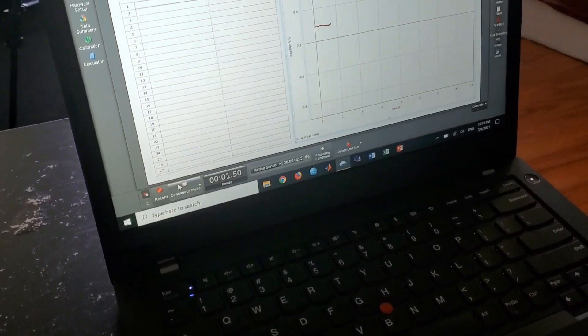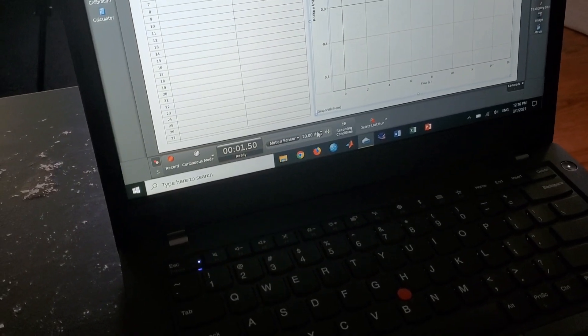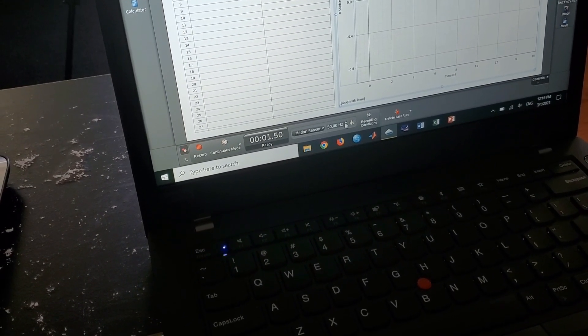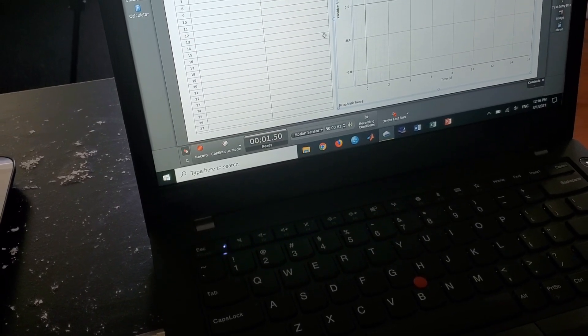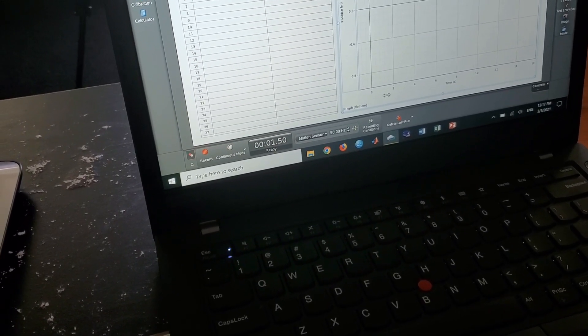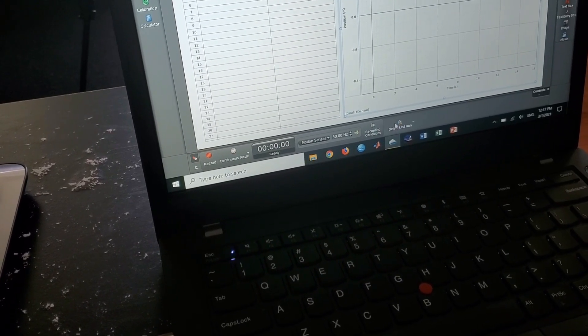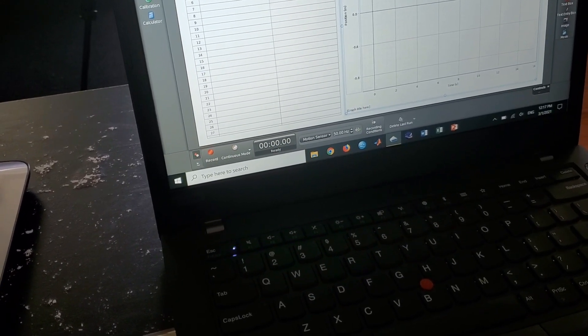Here we go. What are we doing? Okay, and then we're going to clear this, clear the last run, delete last run, and we'll take some measurements here.